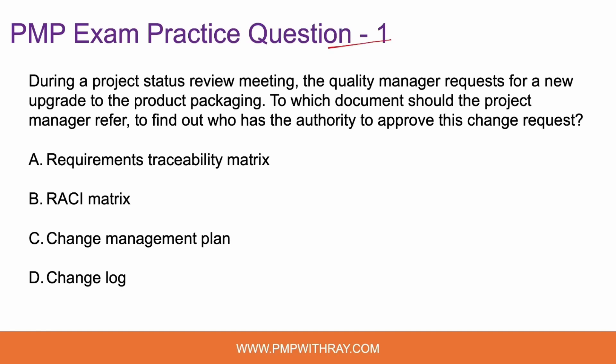Question number one — pause the video, read the question, and try to answer it before we solve it together. The drill will remain the same as the previous Q&A sessions. During a project status review meeting, the quality manager requests a new upgrade to the product packaging. Note that it's a new request for an upgrade. To which document should the project manager refer to find out who has the authority to approve this change request?